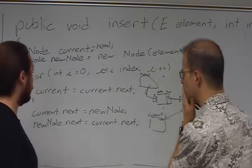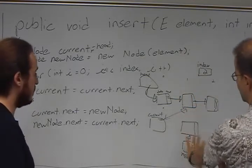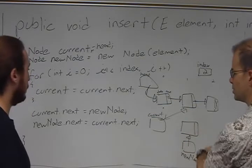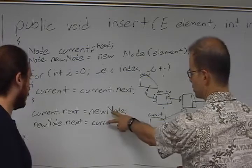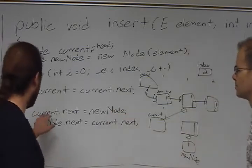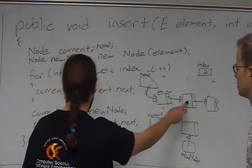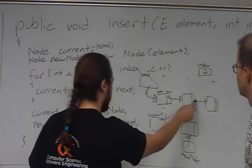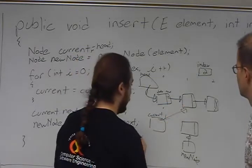Okay. Now, we've gotten to the point where current is pointing here, right? Yes. And we've got new node. Yes. So I want you to similarly do a careful walkthrough with me for these last two lines and show me what they're doing. Okay. Well, current.next, so current's pointing to this node, and then .next, this thing right here, and it's equal to new node.